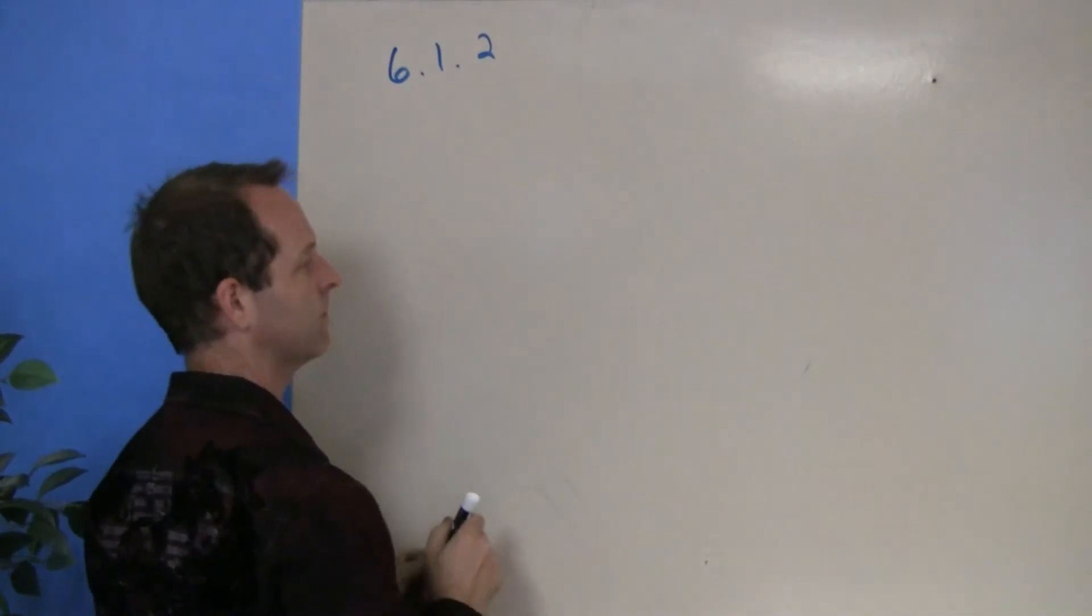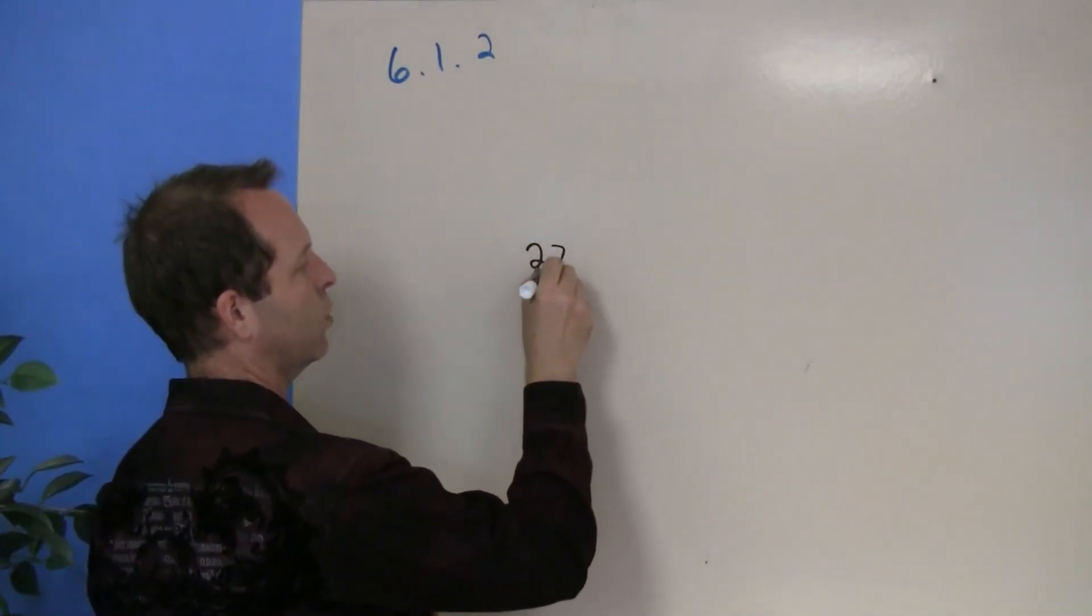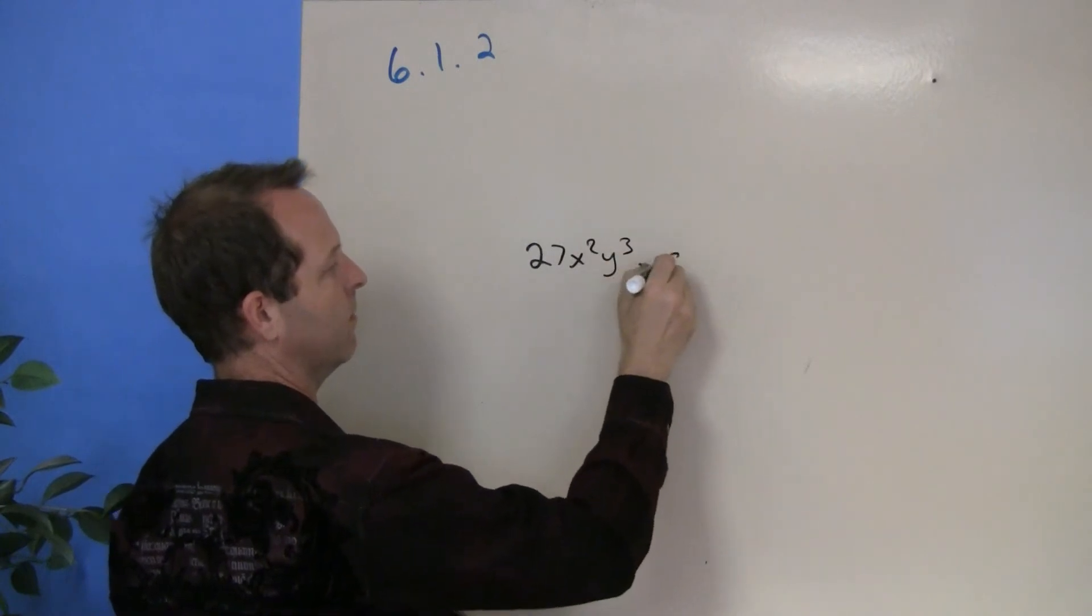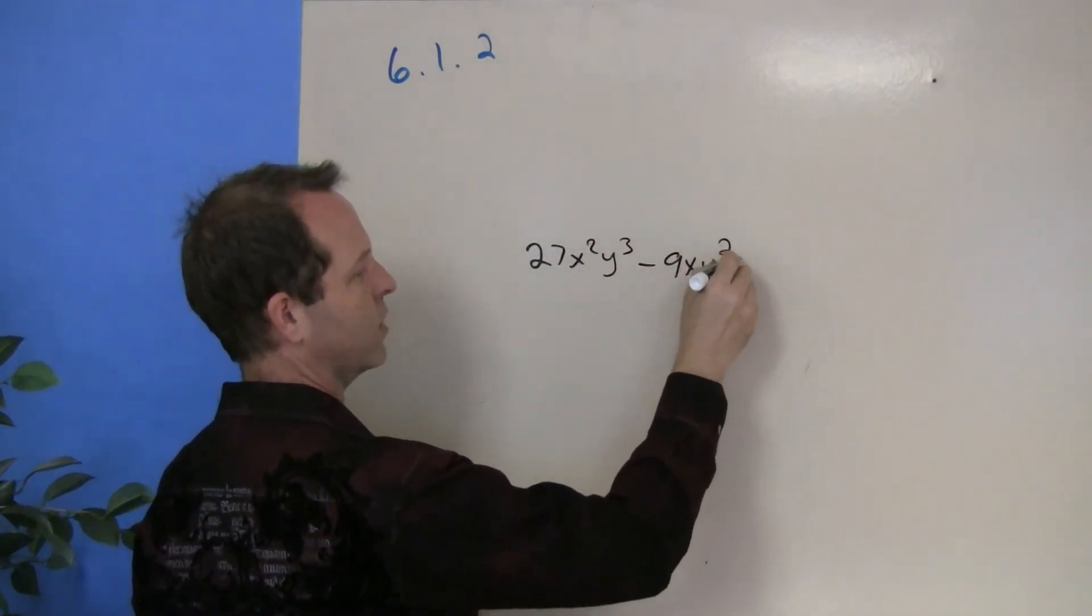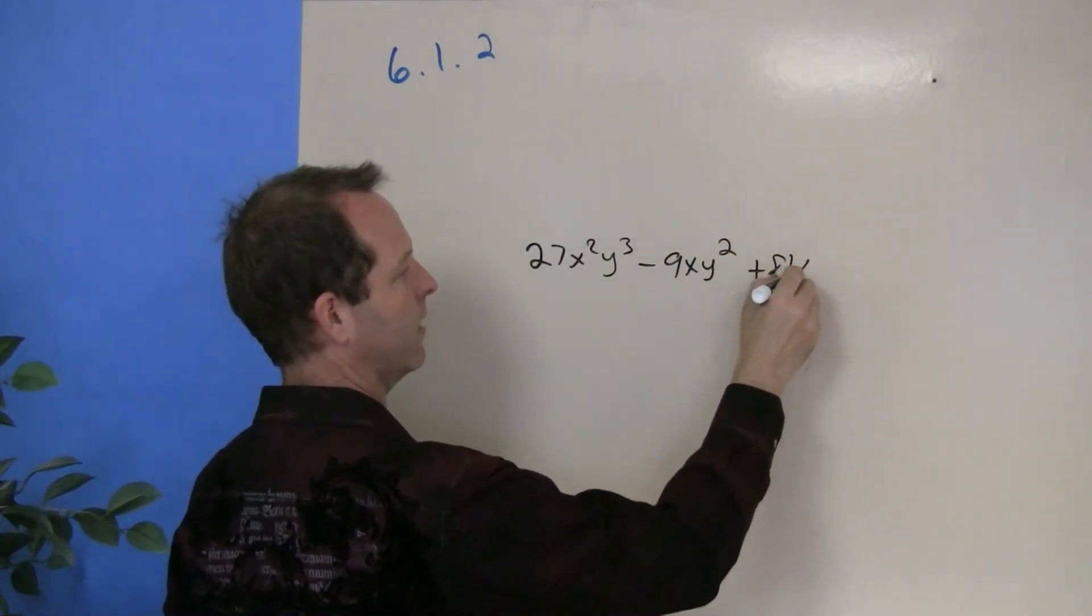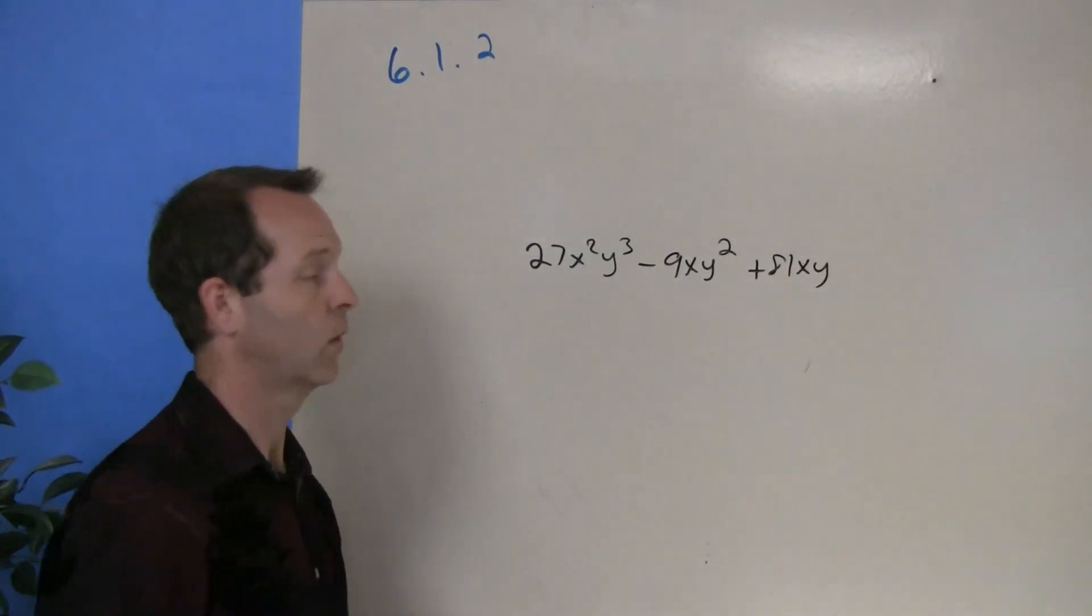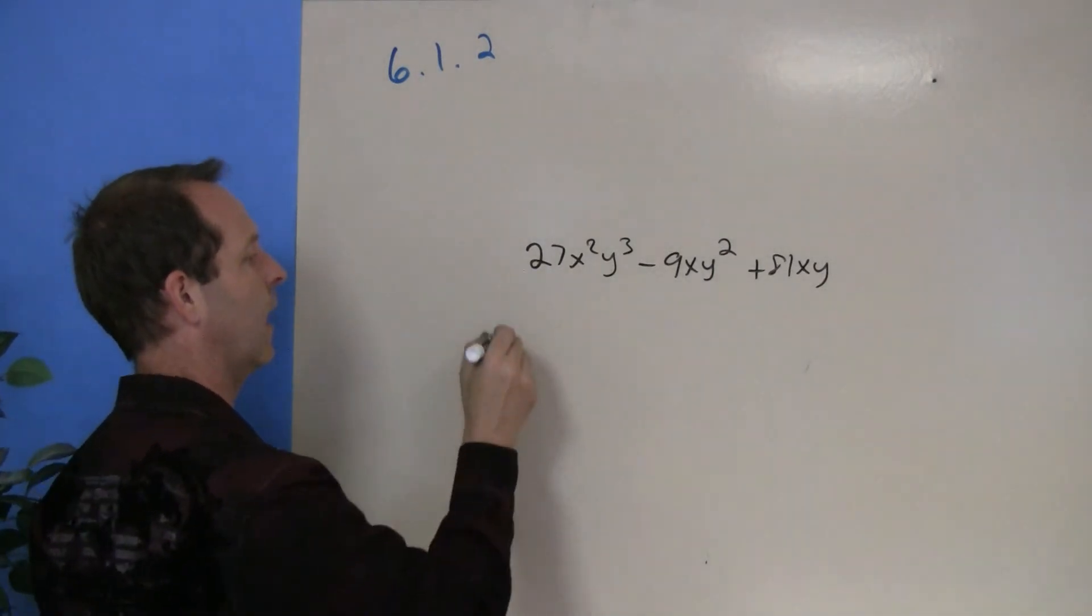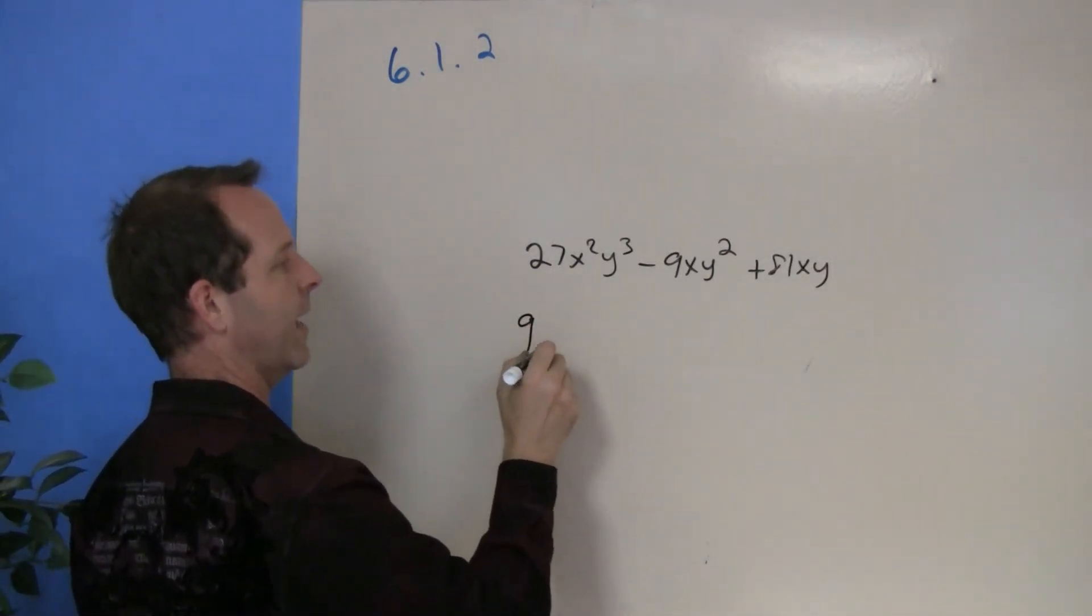Last example. 27x²y³ - 9xy² + 81xy. What's its greatest common factor? 9xy.